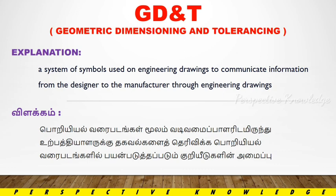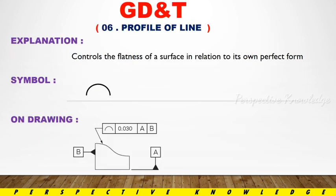The main purpose is communication, and to avoid miscommunication. The GD&T symbols are used to follow up. The profile of line controls the flatness of the surface in relation to its own perfect form. The profile of line looks like an open semicircle, and in the engineering drawing it is used as a half circle. The specification is 0.03.